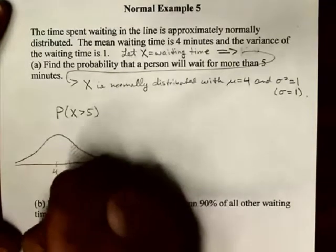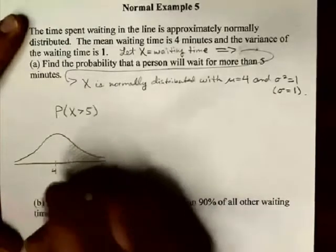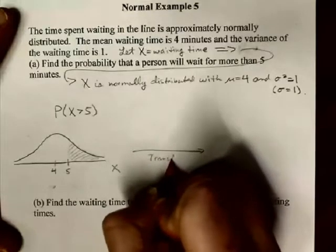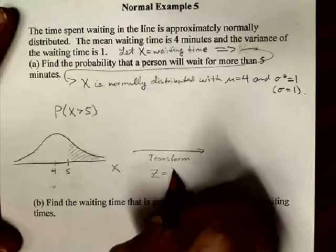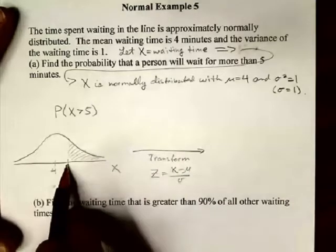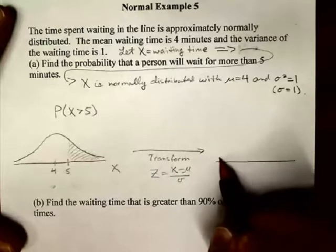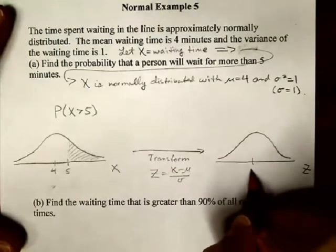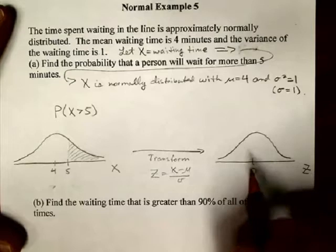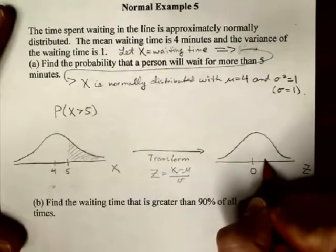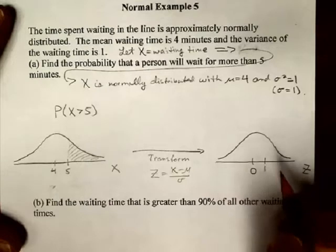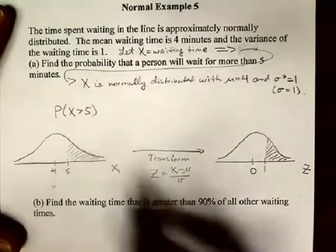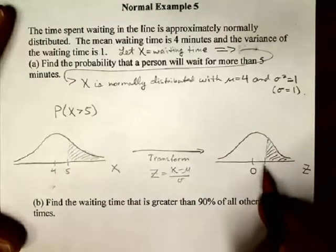So if you recall, the z-score transformation, if I use this transformation, that Z equals X minus mu over sigma. This picture now becomes, in terms of the z-axis or the z-distribution. Here we are the z-distribution. The mean is 0, and this point 5 is actually at the point 1, and the reason why is because the distance between 4 and 5 is 1 standard deviation.